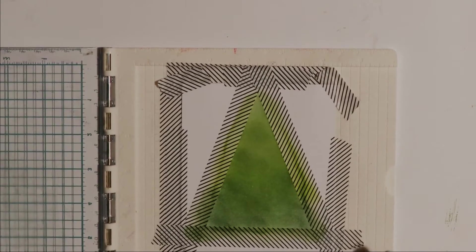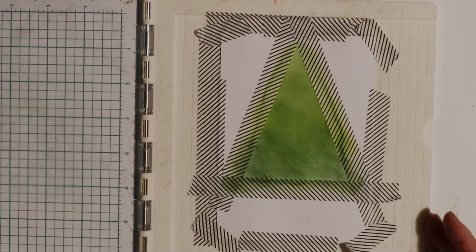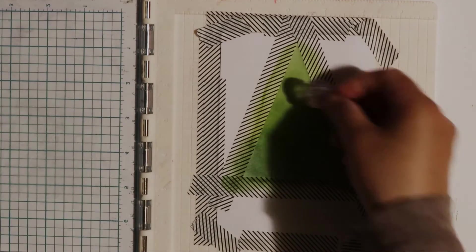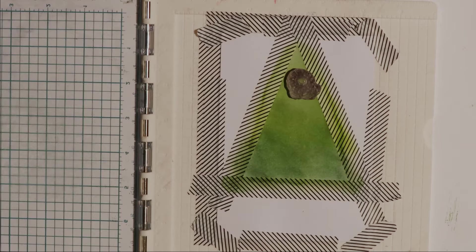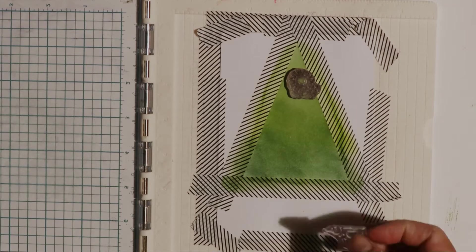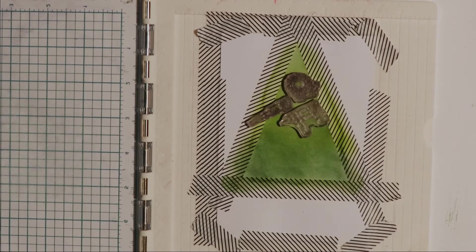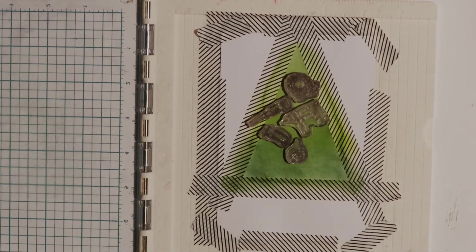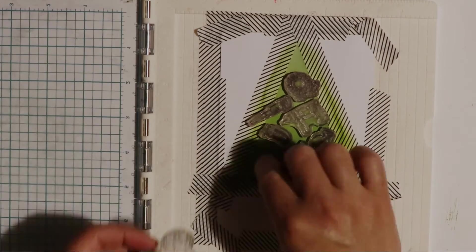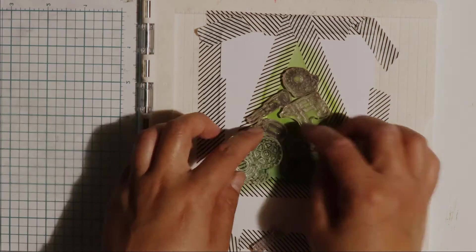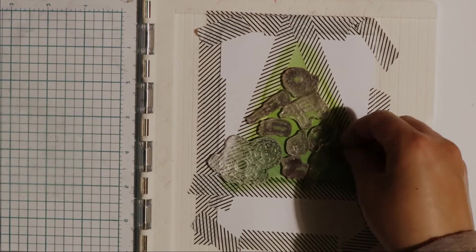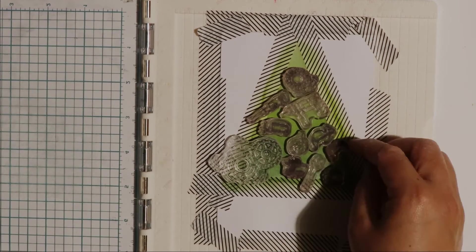Now here I'm using my stamping platform which you can see that I've attached my card front to. And I'm going to arrange the engineering tool stamps inside the blended triangle. Now these are stamps from a stamp set called Engineer's Rule, made by Altenew. And the stamping platform I'm using today is a We Are Memory Keepers precision press.